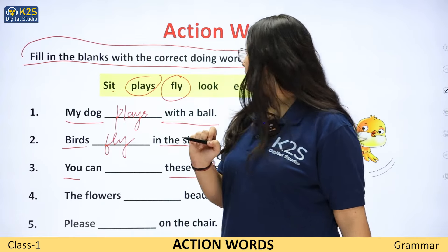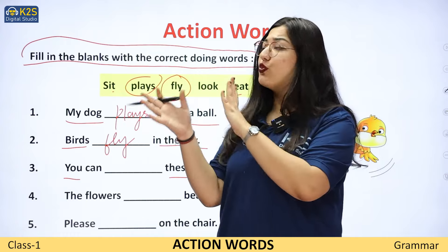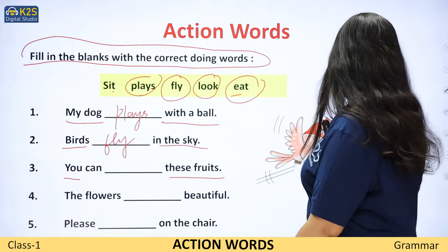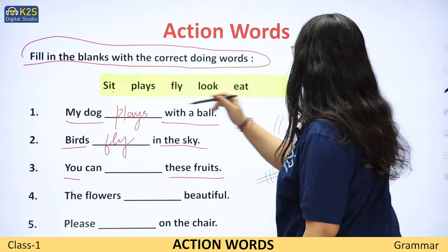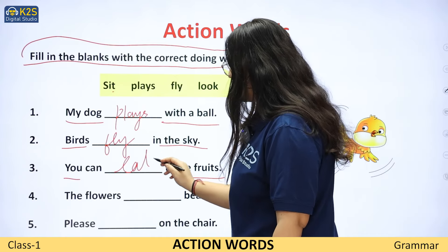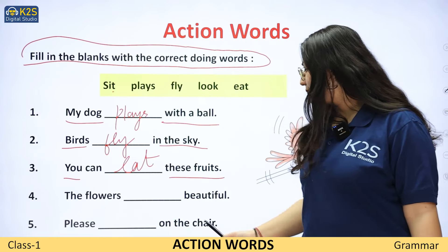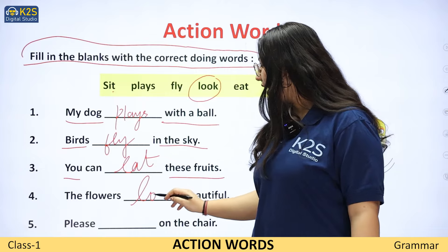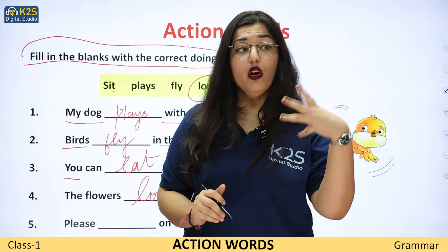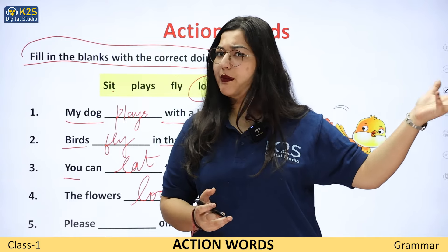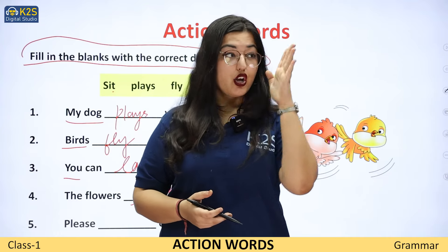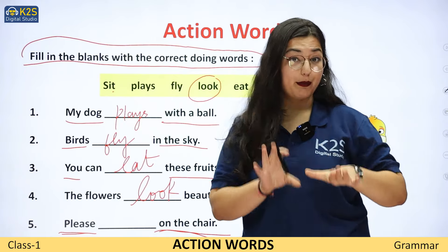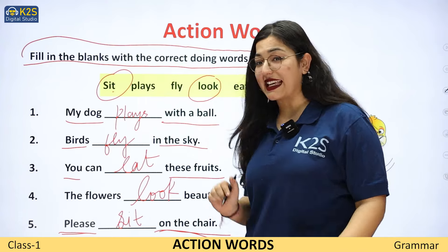'You can ___ these fruits.' In fruits ko kya kar sakte ho? Fruits ke saath khelte to nahi, fruits uda nahi sakte, fruits ko hum dekh nahi sakte — fruits ko hum khate hai. Toh kaunsa action jayega? Eat. 'You can eat these fruits.' 'The flowers ___ beautiful.' Flowers dekhne mein kya lagte hai? Sundar lagte hai. Toh look bhi kya hai? Ek action hai. 'The flowers look beautiful.' '___ on the chair.' Chair hum kis liye use karte hai? Baithne ke liye. Toh: 'Sit on the chair.'